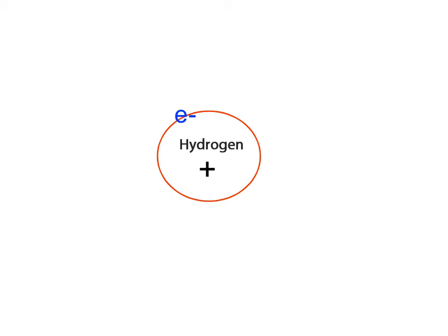You are correct if you said 2. Based on what you now know about electron distribution, is the hydrogen atom stable or unstable?